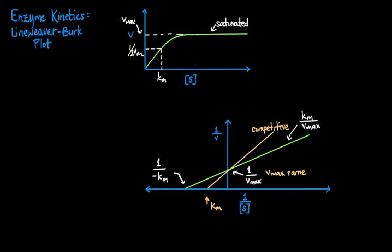Now let's say we add a different inhibitor, and this inhibitor changes the original graph to look like this. The x-intercept has stayed the same, so Km has remained unchanged. But the y-intercept has increased, which means that Vmax has decreased.